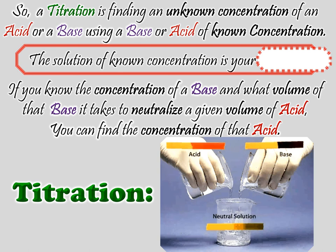The titrant is the one you know going in. Performing the experiment, you can figure out the other. It doesn't matter which is which — if you know the base, you can figure out the acid, and vice versa. You can't pour a base into another base or an acid into another acid, but as long as you have both different species and know the concentration and volume of one, you're set. A picture of just pouring beakers together won't work — beakers are too approximate for volume readings.